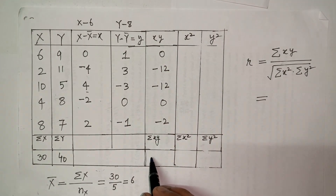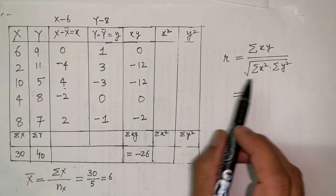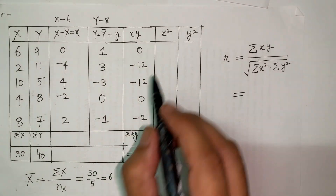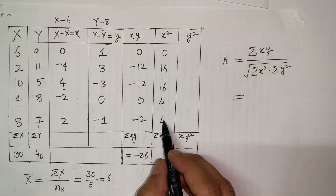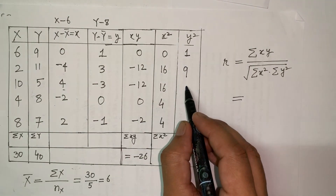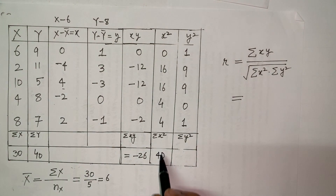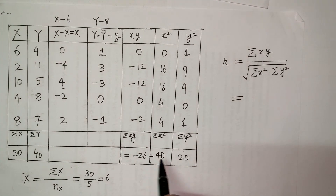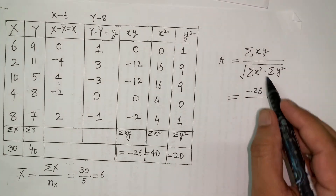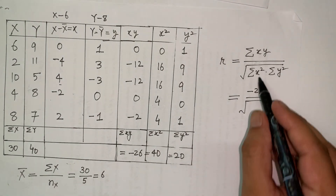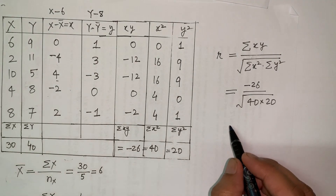Summing all the xy values: 0 + (−12) + (−12) + 0 + (−2) = −26. So Σxy = −26. For the denominator I need Σx² and Σy². Squaring the small x values: 0, 16, 16, 4, 4 — summing gives Σx² = 40. Squaring the small y values: 1, 9, 9, 0, 1 — summing gives Σy² = 20. Now plugging into the formula: r = −26 / √(40 × 20).